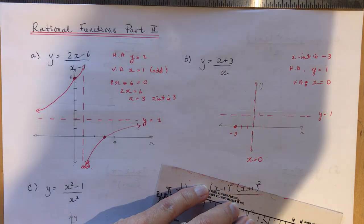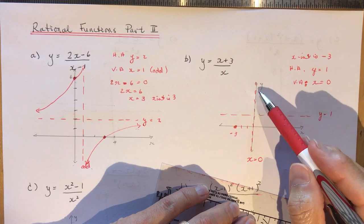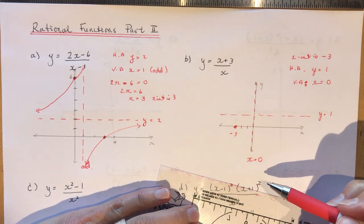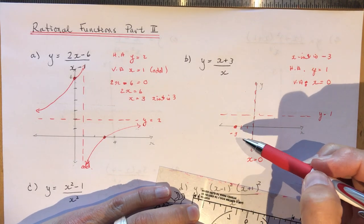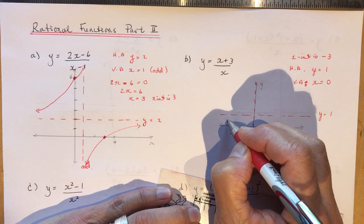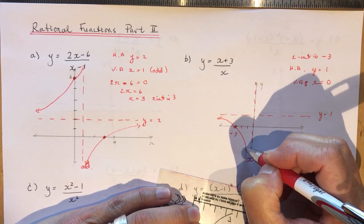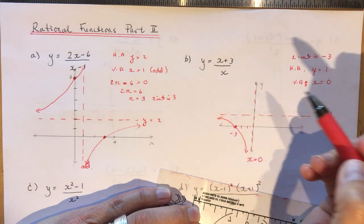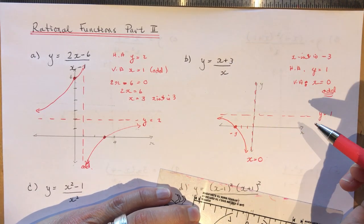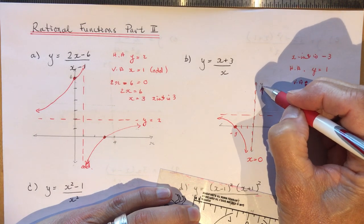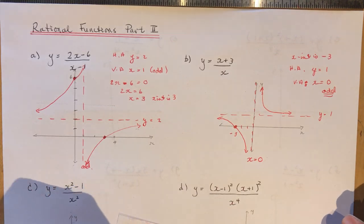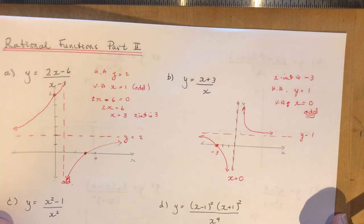We don't have a y-intercept because we have an asymptote at x equals 0. This function has to approach this asymptote, so it has to be going this way. On the other side it's going down. This vertical asymptote is odd — degree of 1 — so it's going up on the other side, approaching y equals 1 as x approaches infinity.